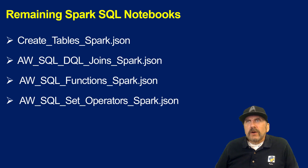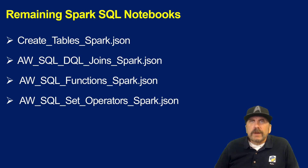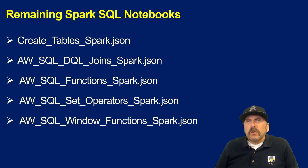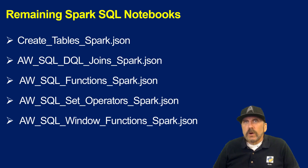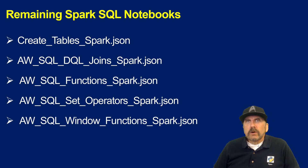The other thing I talk about are set operators, where you use statements in SQL that work with two different sets of data. You might have results from one query and then append another query's results onto that using something like the union operator. There's also a notebook focused on window functions, which are extremely useful — they're very helpful when you want to do two different things in the same query, like keeping a running total while also getting grand totals or detail rows. Window functions can be extremely powerful and help you avoid a lot of complicated SQL coding.